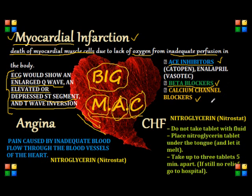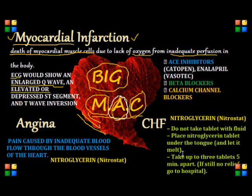Lastly, let's look at calcium channel blockers, which basically prevent the movement of calcium within the cardiac system. What they do is decrease the cardiac workload and cardiac muscle contractility. The medications usually end in 'dipine,' such as amlodipine, which is Norvasc, and nifedipine.